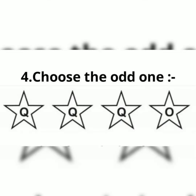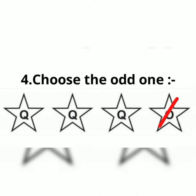Fourth, choose the odd one. We have three Q and one O. So O is the odd one out.